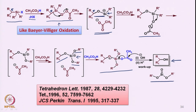So, in the Fleming oxidation, in two steps: first the silicon substrate bearing one phenyl ring and two carbon-based groups undergoes proto-desilylation to form a silicon-X bond, and then with peracetic acid one eventually gets the alcohol having the same chirality as the starting silicon substrate.